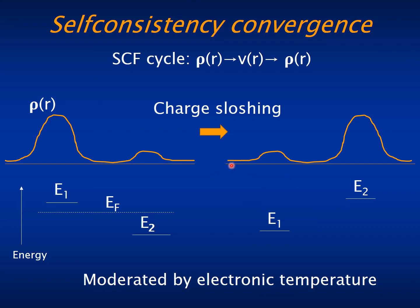One simple way of moderating this is to increase the electronic temperature — not to fill the states strictly based on whether they are above or below the Fermi level, but to weight them with a Fermi-Dirac weight, so that both states will be partially occupied.